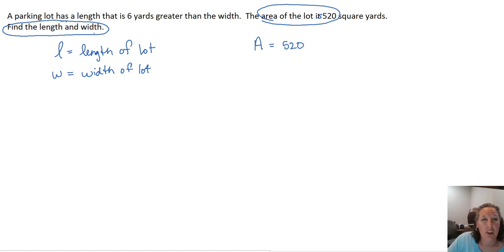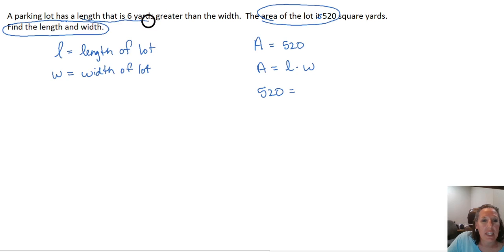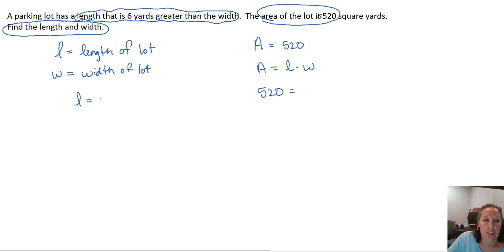They don't tell us it's a rectangle, but we're going to make that assumption — a rectangular parking lot, because the length and the width would have to be different if we weren't talking about a rectangle. The area of a rectangle is length times width, so we've got 520 equals length times width. And we know the length is six yards greater than the width, which means length equals width plus six yards. So let's plug that in for L: W plus six times W.